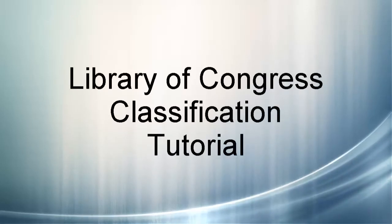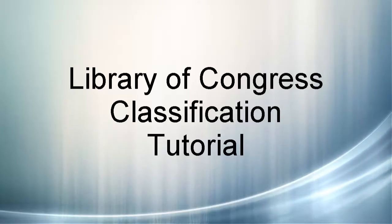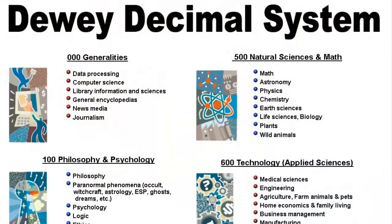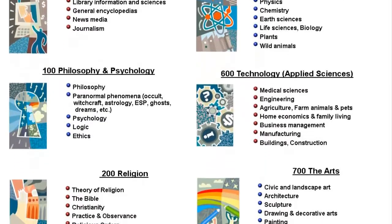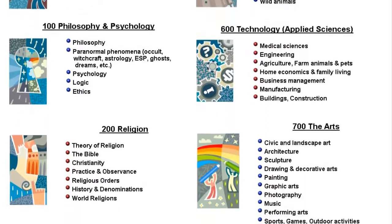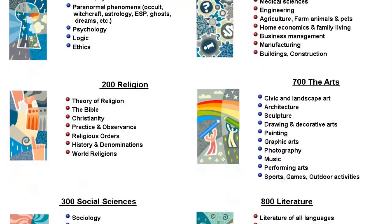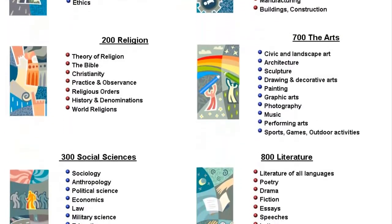Welcome to Matheson Libraries' tutorial on Understanding the Library of Congress Classification System. You are probably familiar with a classification system called Dewey Decimal. It is the system that public and school libraries use for shelving their books and is numerical.